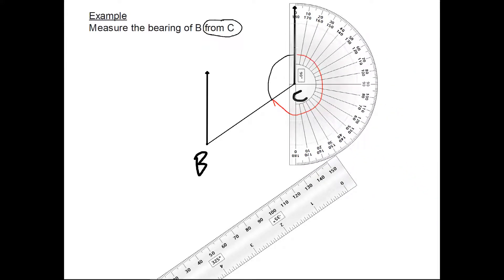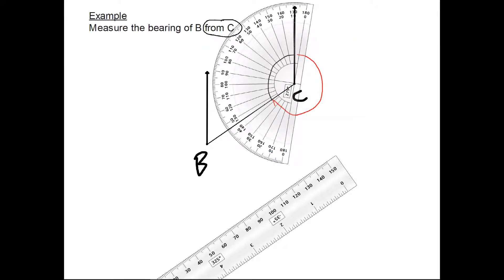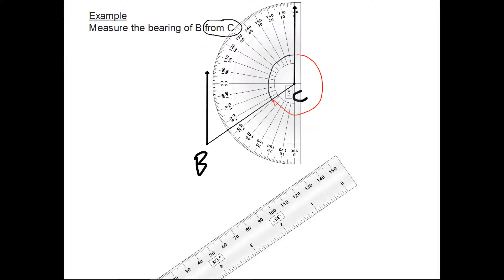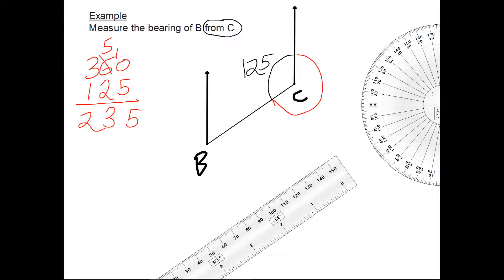So let's measure this interior angle first. The interior angle is 125 degrees. So to get the red exterior angle, which is the actual bearing, I take away from 360: 360 take away 125.